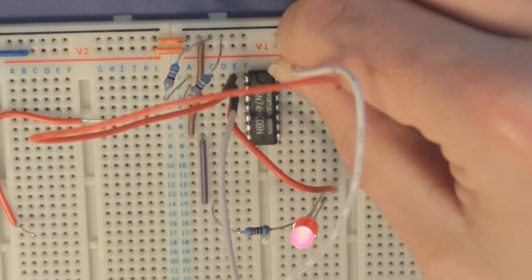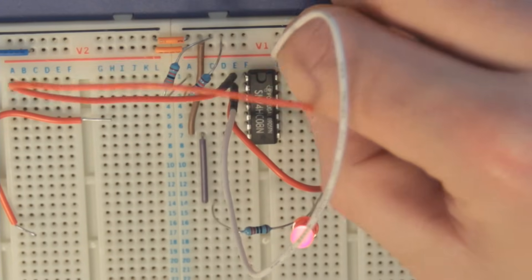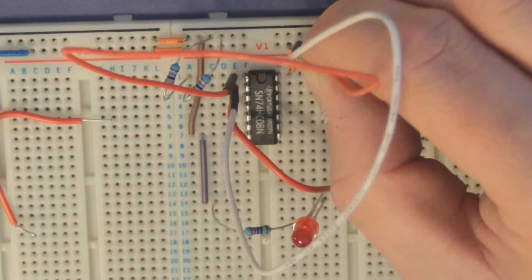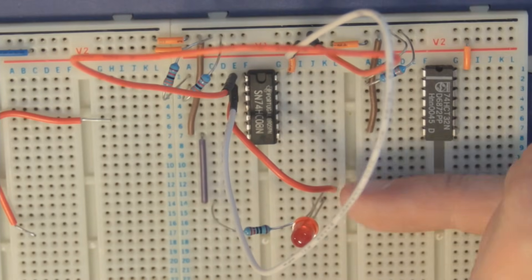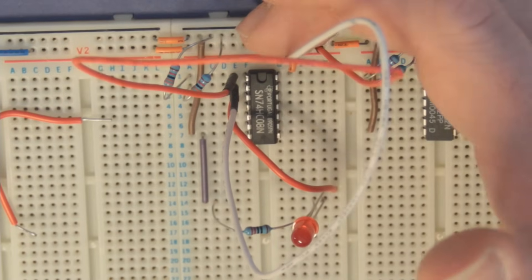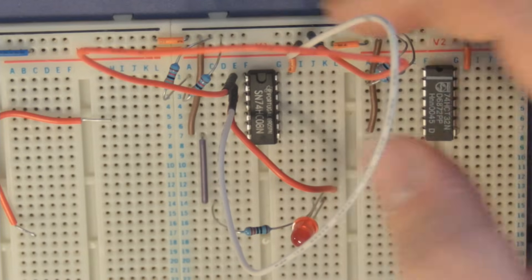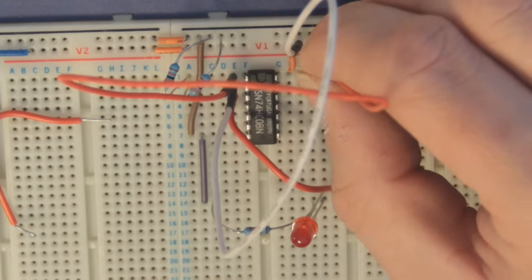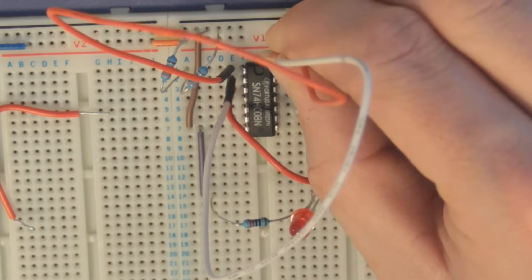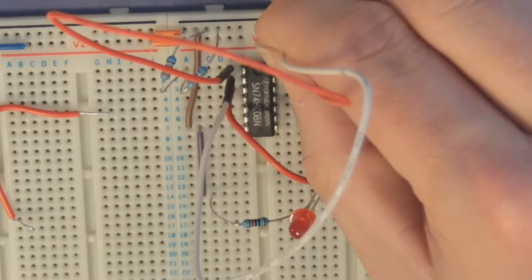That's generally what we use with what was called TTL logic. These days, you use different voltage levels and so on, but the principle is the same. You have one voltage which represents false or zero, and another voltage, which is generally higher, that represents one or true. Both of these are currently connected to logic one, or five volts. If I disconnect one and connect it to logic zero, you can see that immediately that light goes off, because the AND gate has now got one input at zero, one input at one. One and zero is zero by the laws of Boolean algebra.